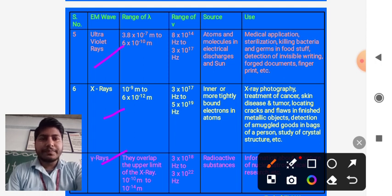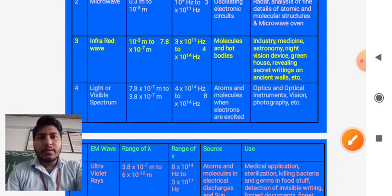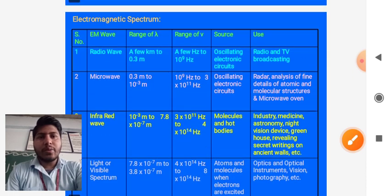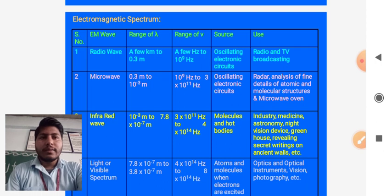These are the seven rays that exist in electromagnetic spectrum. Now we are going to start with the range of wavelength of these waves, the range of frequency of these rays, the source from which it originates, and what are the uses of electromagnetic rays.